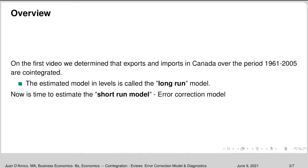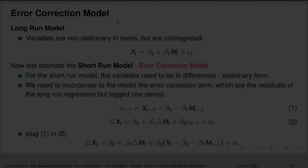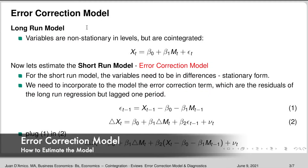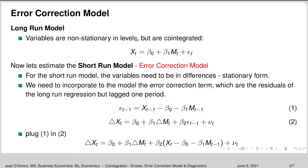The short-run model is the error correction model. As we saw in the first video, we estimated the long-run model where the variables were non-stationary in levels but they were co-integrated — that's what we determined with the Phillips-Ouliaris and the Engle-Granger tests.